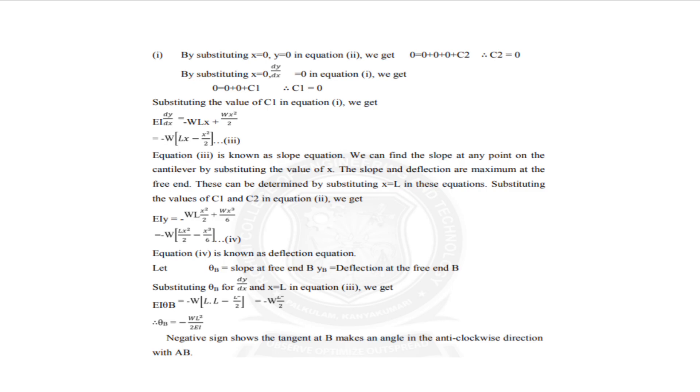So by substituting the boundary conditions we are getting C1=0, C2=0. So by using these conditions we are getting the equation for slope: EI dy/dx = -WLx + Wx²/2. And that is the third equation and fourth equation.